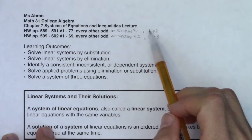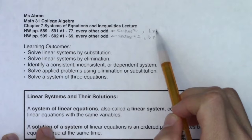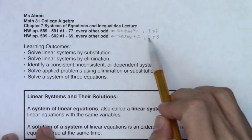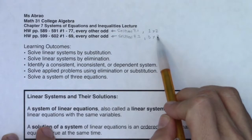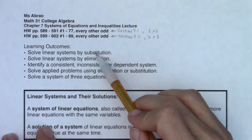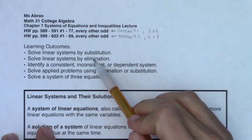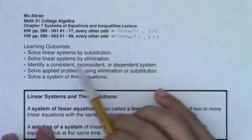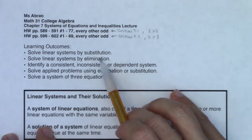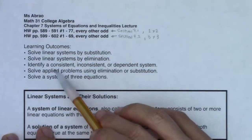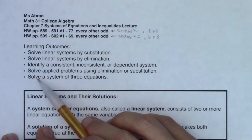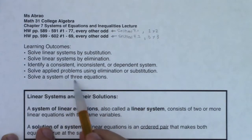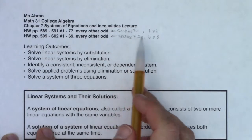When I say two by two, I mean two variables and two equations to go with it. We're going to bump into new things when we talk about three variables accompanied by three equations. We'll solve these systems by substitution and by elimination, identify consistent, inconsistent, or dependent systems, solve applied problems — which is code for word problems — and then officially solve systems of three equations in section 7.2.